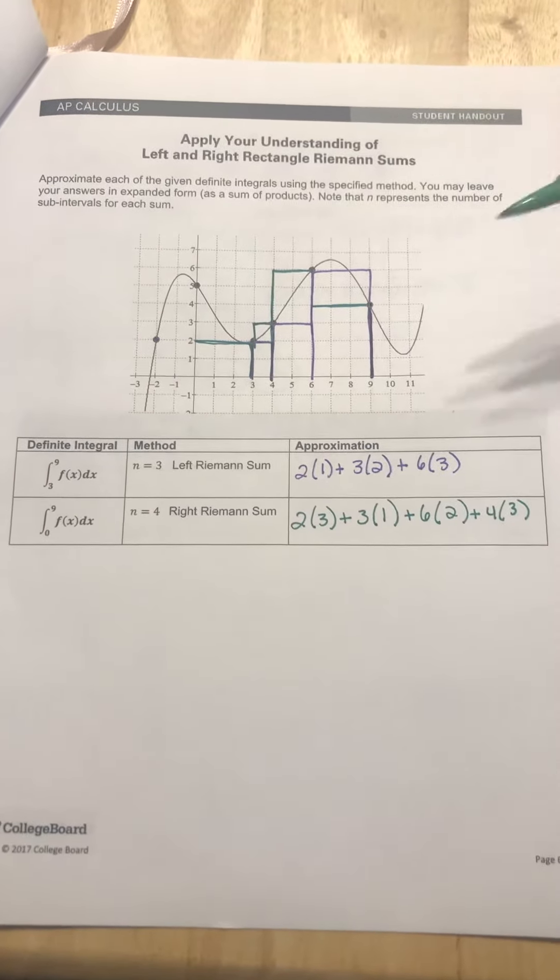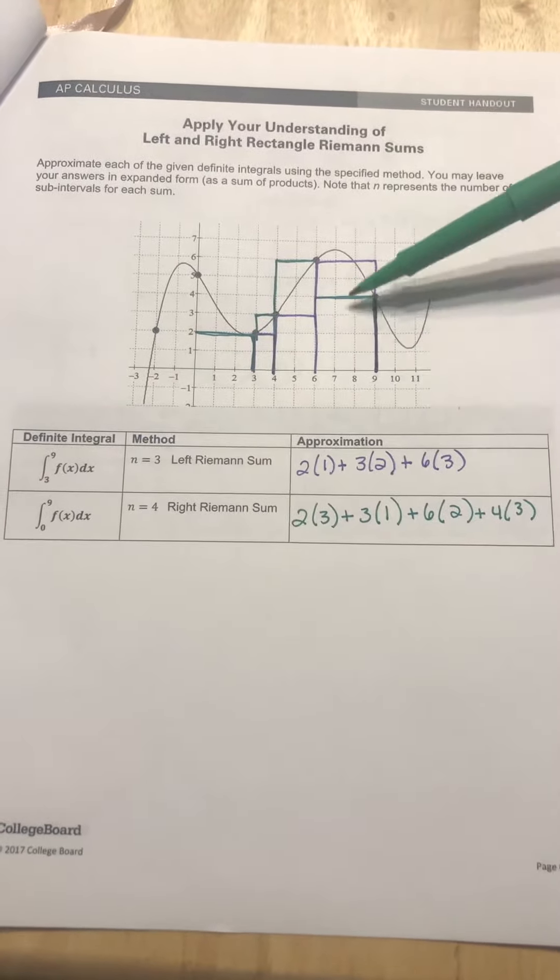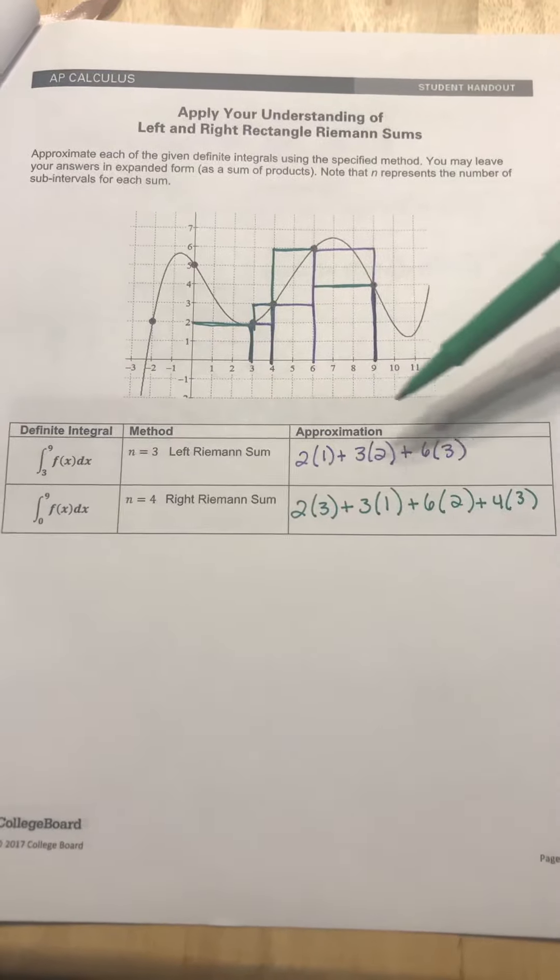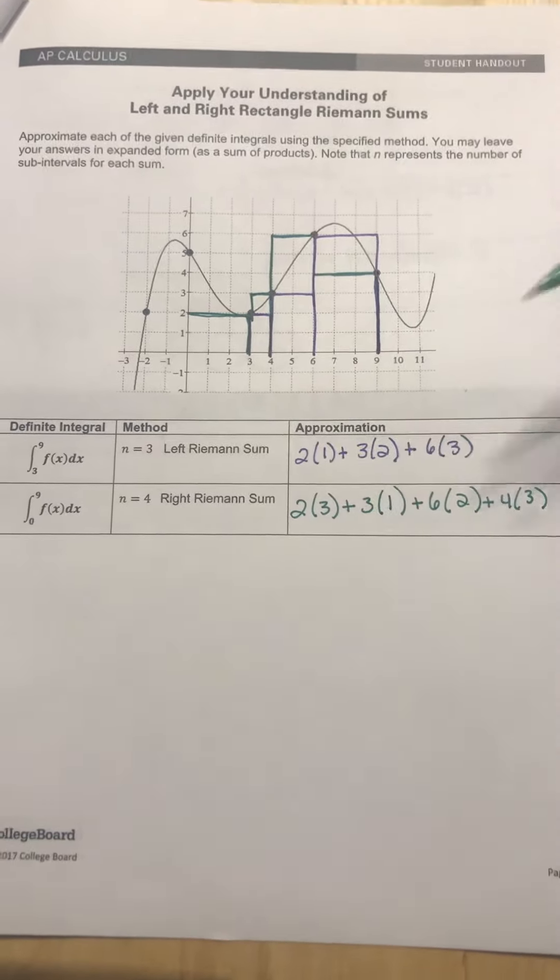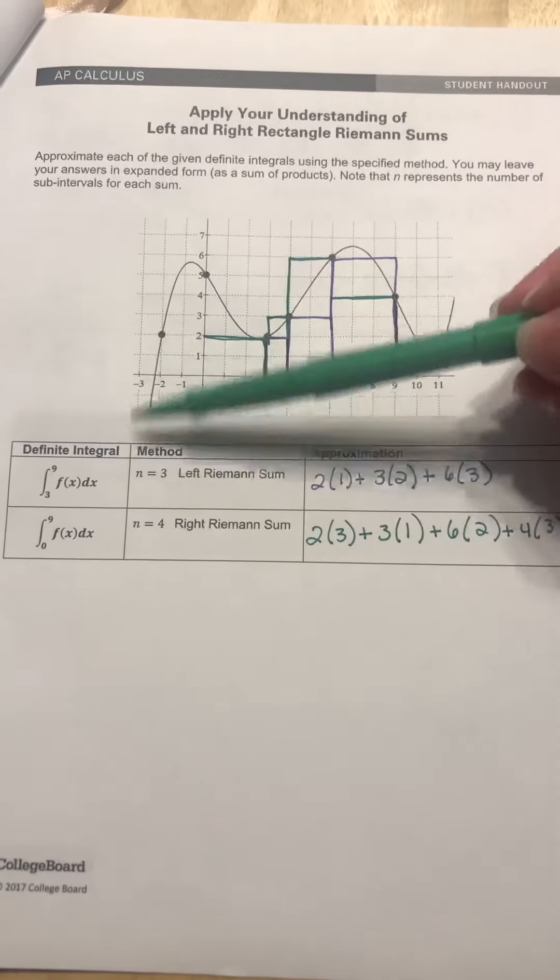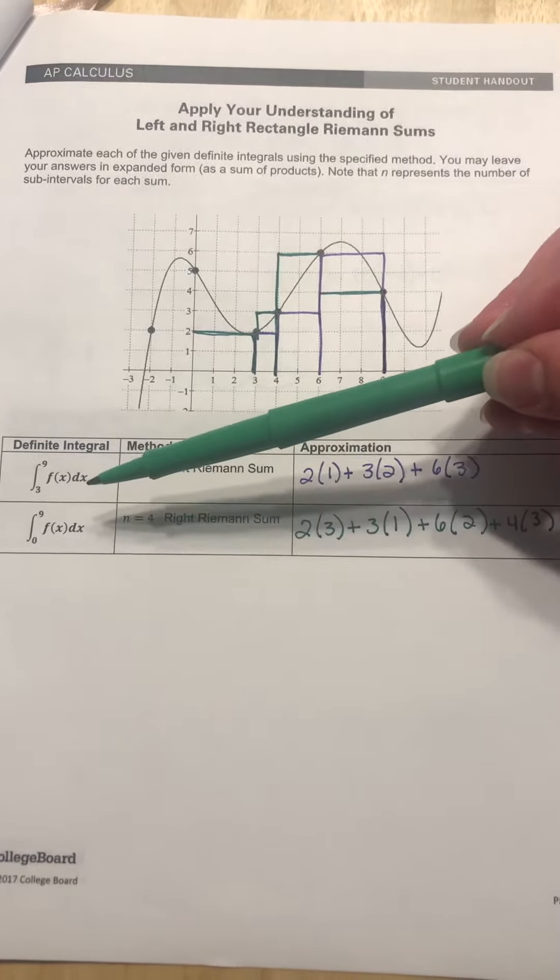On this page they're wanting you to actually figure out the approximation and they note that you don't have to actually sum them up. You can leave them like this because remember in free responses, as long as it's all numbers, it's the answer. Okay, so they want you to go from three to nine.